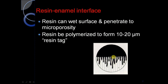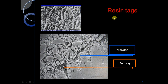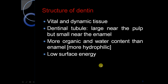You can see these small ones — these are the micro tags, small in size. And these are larger micro tags. So, what is the structure of dentine?